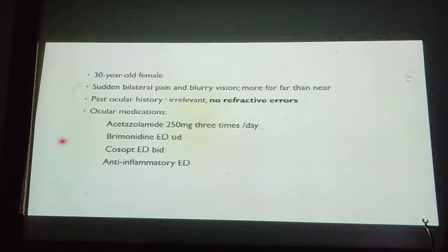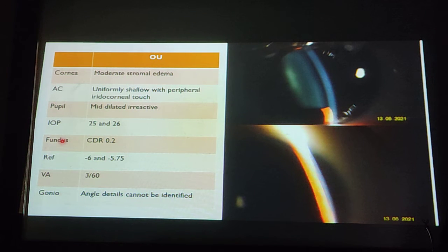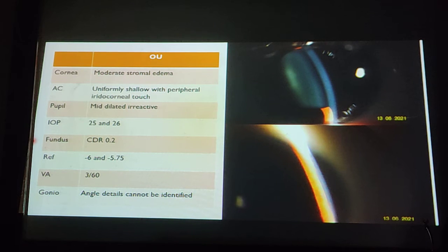Her ocular medications included antiglaucoma drops that were prescribed elsewhere when she presented to us. On examination, vision was light perception bilaterally. She had moderate edema of the cornea. The anterior chamber was uniformly shallow with peripheral corneal touch. The pupil was mid-dilated and non-reactive. IOP was high, 25 and 26. Her fundus showed no significant pathologic changes. Her refraction was negative 6 and negative 5, even though she did not have any refractive errors before. And her gonioscopy was 360 degrees Shaffer grade 1.